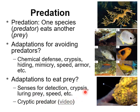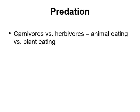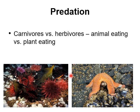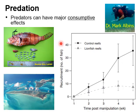I will post a video onto Canvas so you can see an example of an incredibly cryptic predator. As I mentioned, predation includes animals eating other animals or animals eating plants. Animals that eat other animals are carnivores — like the typical West Coast sea star eating a California mussel. Whereas sea urchins eating kelp are herbivores. Predators can have consumptive effects, where they affect prey populations simply by eating them, and no predator does a better job of this than lionfish. Here you can see a lionfish that was about 10 inches long and all of these items were found inside its stomach — obviously a very skilled predator.